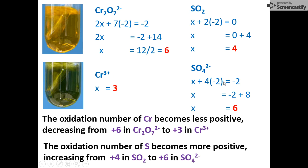Similarly for sulfur in sulfur dioxide and sulfate: the oxidation number of sulfur becomes more positive, increasing from plus four — the oxidation number we worked out — in SO2, to plus six in sulfate.